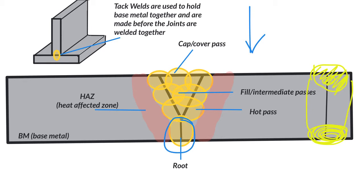The next pass is sometimes referred to as the hot pass or cushion pass, but it's still considered part of the intermediate passes. Anything between the root and the cap are considered intermediate passes. These are called the fill intermediate passes. The top layer is our cover cap. If this is a critical weld, chances are the root, the intermediate passes, and the cover pass are all going to be inspected — either a visual test or non-destructive testing like x-ray or mag particle.